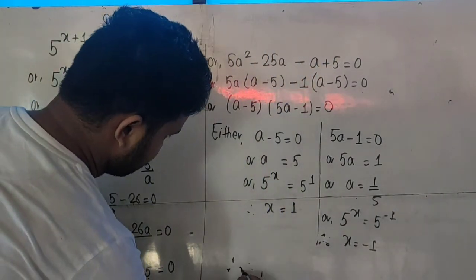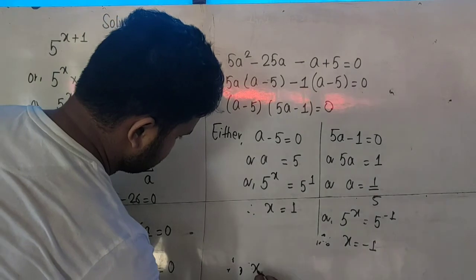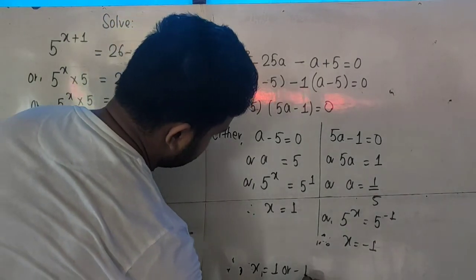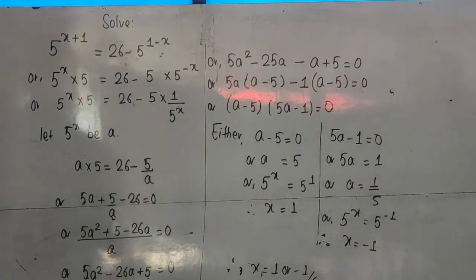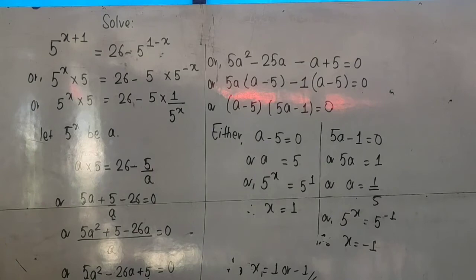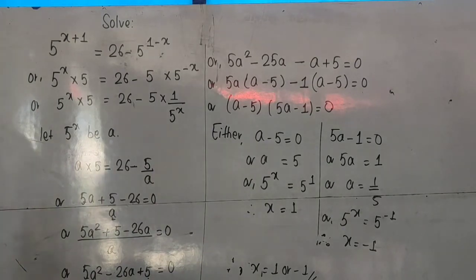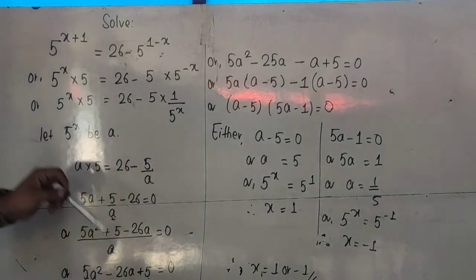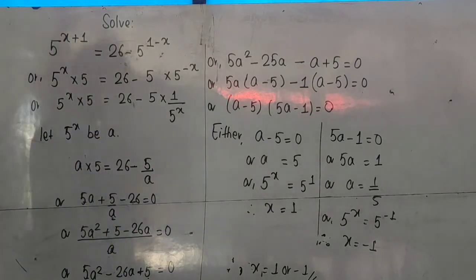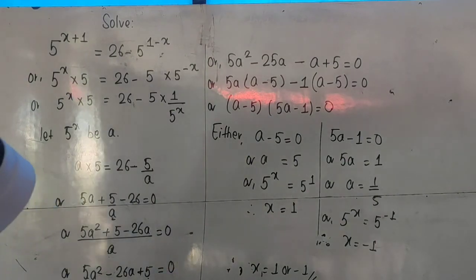So the solutions are x = 1 or x = -1. That is the way to solve this problem. I hope everyone is clearly understanding these steps. Thank you.